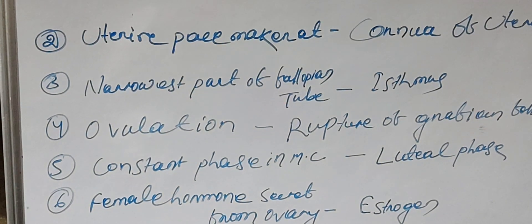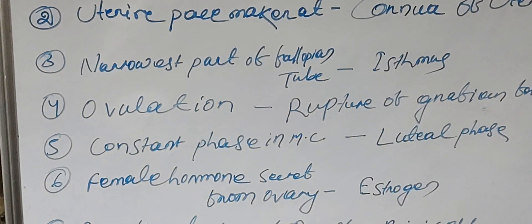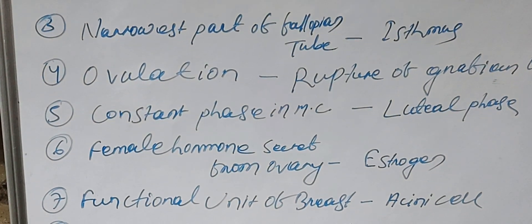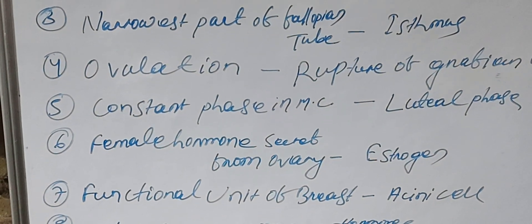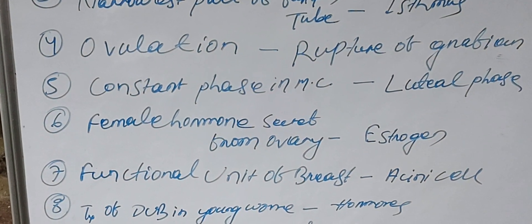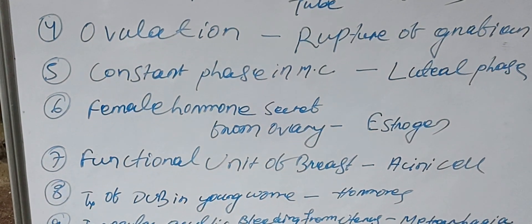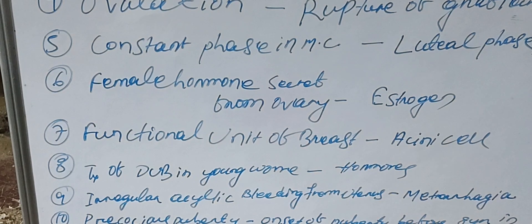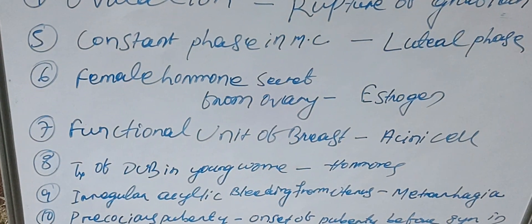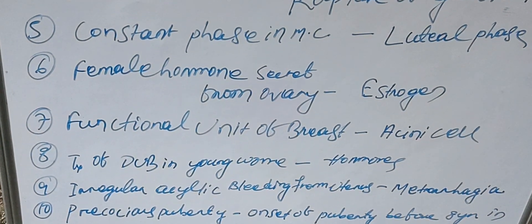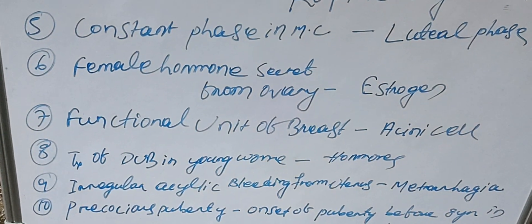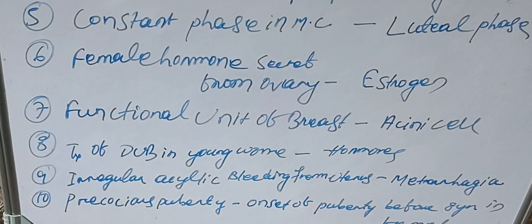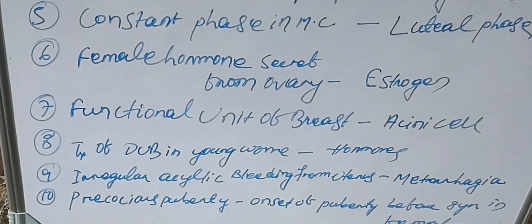The female hormone secreted from the ovary is estrogen. The functional unit of the breast is the acini cell. Treatment of dysfunctional uterine bleeding (DUB) in young women is hormonal. Irregular acyclic bleeding from the uterus is menorrhagia.